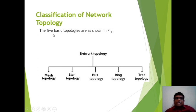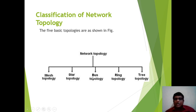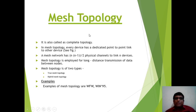Now we will discuss the 5 basic topologies in computer networking: Mesh Topology, Star Topology, Bus Topology, Ring Topology, and Tree Topology. Starting with Mesh Topology, it is also called Complete Topology.